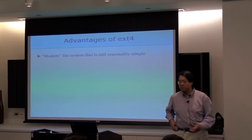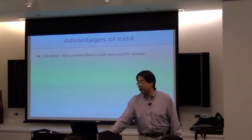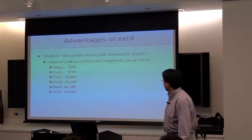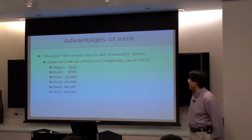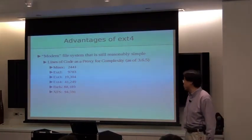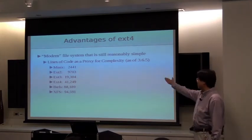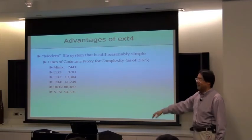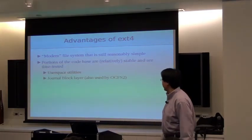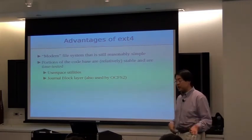What are the advantages of EXT4? It's a modern file system — it has delayed allocation, extents, and hash B-trees for directories. It's still reasonably simple. In lines of code: Minix was about 2,500; EXT2 was a factor of four; EXT3 doubled that; EXT4 doubled again; BtrFS is another doubling; and XFS is close to 100K. That gives you a sense of codebase complexity. Portions of the codebase are time-tested — both the user-space utilities and the journal block layer. We had to make it 64-bit clean, so there's now JBD2, but fundamentally the code hasn't changed — we just doubled all the widths. The journal block layer is also used by OCFS2, Oracle's cluster file system, so we have multiple users of that same codebase.